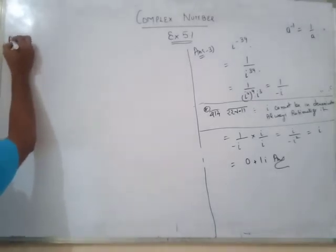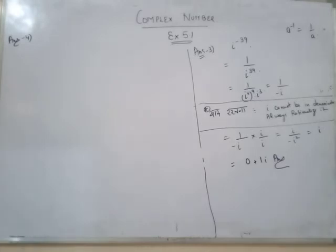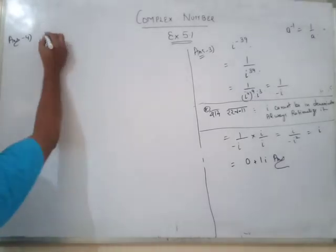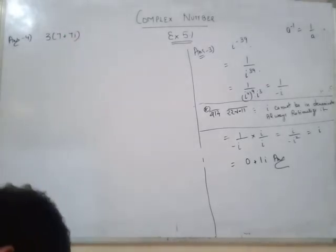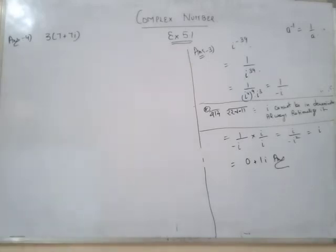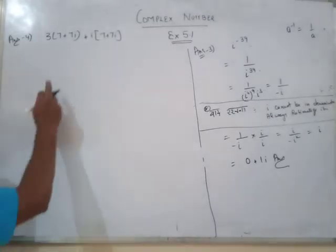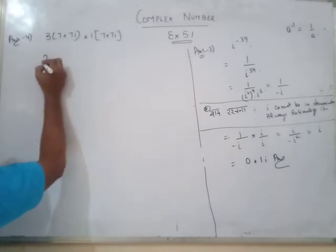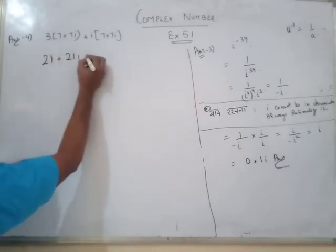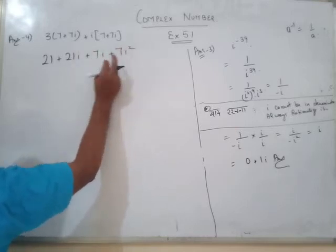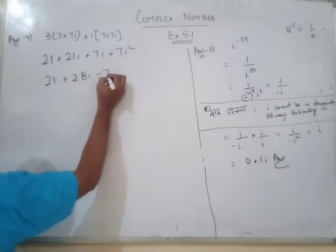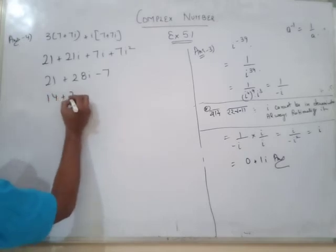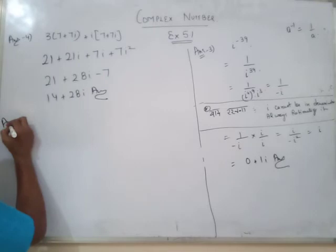Answer number 4: what is given in the question is 3 into 7 plus 7 iota, plus 7 into 3 into 7 plus 7 iota. After simplification, the value becomes minus 7. This is your answer number 4. We move on to the next question.